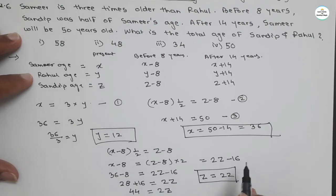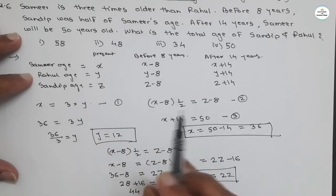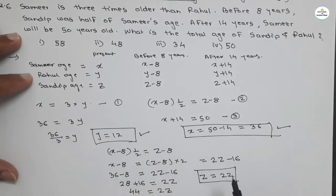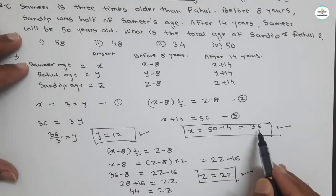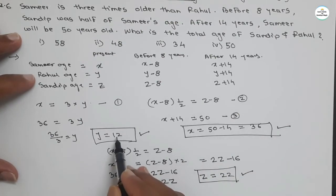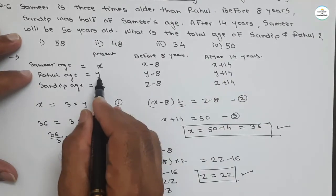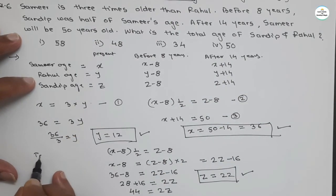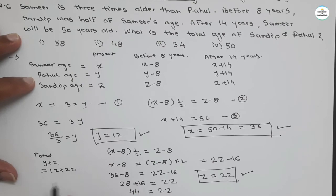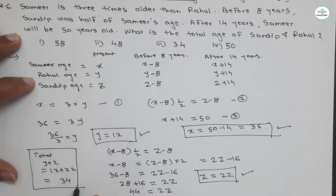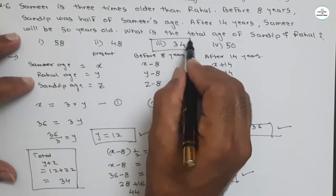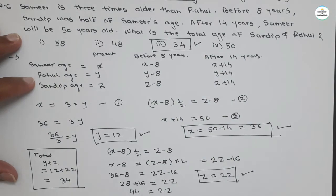Thus we got all three values: X equals 36 years (Samir), Y equals 12 years (Rahul), and Z equals 22 years (Sandeep). What is asked? Total age of Sandeep and Rahul, meaning Y plus Z. Y is 12 and Z is 22, so the total is 34. The answer is 34 years — that is the third option and our correct answer for the total age of Sandeep and Rahul.